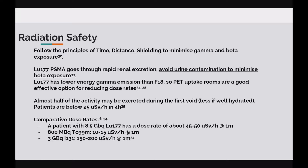In terms of radiation safety, we want to follow the principles of time, distance and shielding to minimise both beta and gamma exposure. You'll only need to be around the patient when the dose is administered. The tracer goes through rapid renal excretion, so keeping in mind these patients are usually incontinent and as part of the prep they'll be drinking large volumes of water and visiting the toilet frequently — it's ideal to put the patient in the uptake room closest to the toilet. If the department has PET uptake rooms, the shielding will be more than adequate at reducing dose rates as lutetium-177 has lower gamma emissions than F-18. Patients can be discharged after about 4 hours.